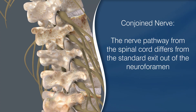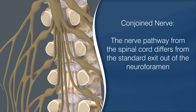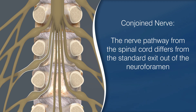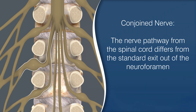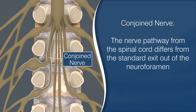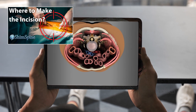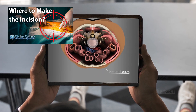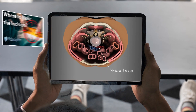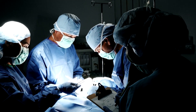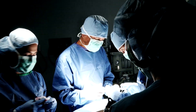Our last variant is the conjoined nerve. For this condition, the nerve pathway from the spinal cord differs from the standard exit out of the neuroforamen. Most people would never know they have such a path, but if you have this variant and you schedule a spinal surgery, the location and direction of the nerve needs to be considered in the surgical approach. Sometimes the incision and surgical approach needs to be adjusted to accommodate the conjoined nerve.